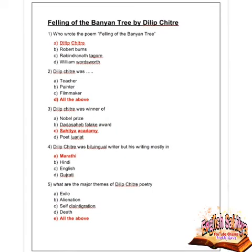We now move to the poem Felling of the Banyan Tree by Dilip Chitre. First question: who wrote the poem Felling of the Banyan Tree? Options are Dilip Chitre, Robert Burns, Rabindranath Tagore, and William Wordsworth. Option A is correct — Dilip Chitre. Next question: Dilip Chitre was what? Options are teacher, painter, filmmaker, and all the above. Option D is correct — all of the above.